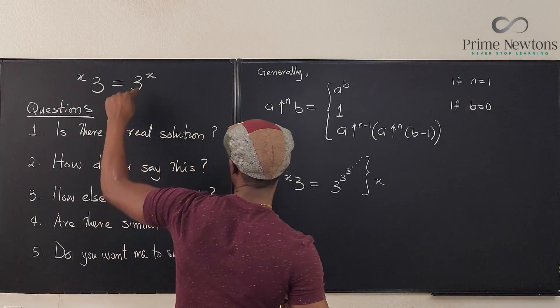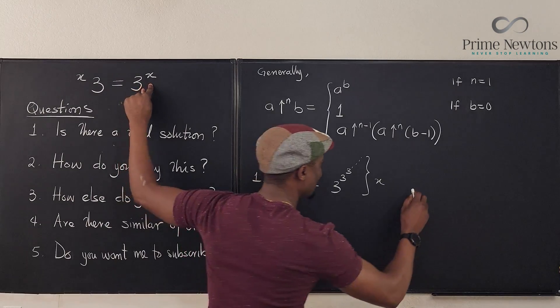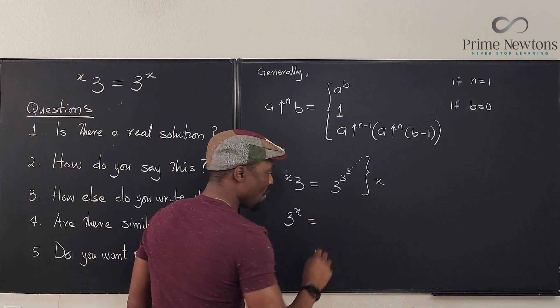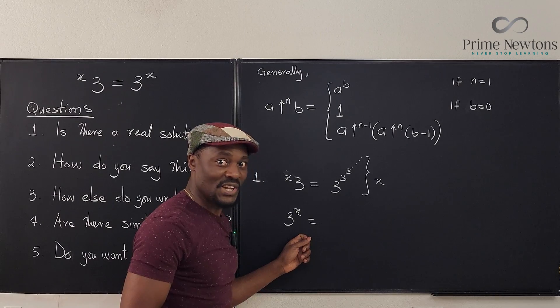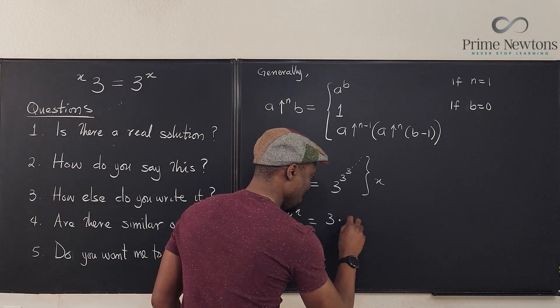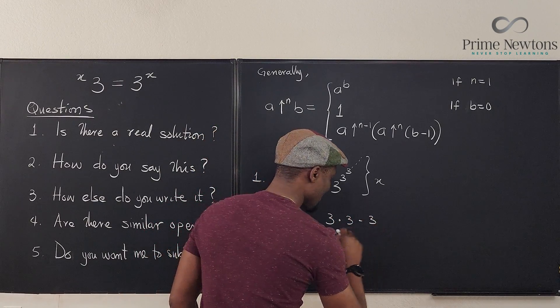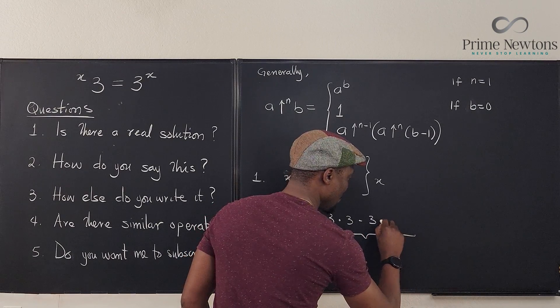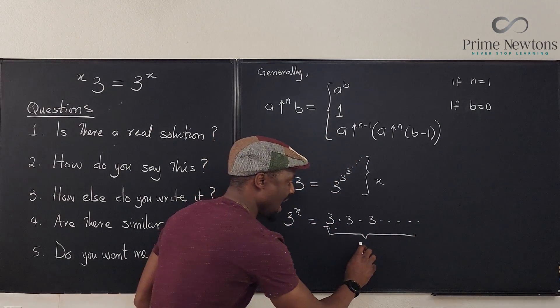But if you consider this side, it tells you that it's three raised to power X. Well, three raised to power X does not have towers. All it has is just multiplication. How many of these do you need? We need X of them. We don't know how many, but it's going to be X.